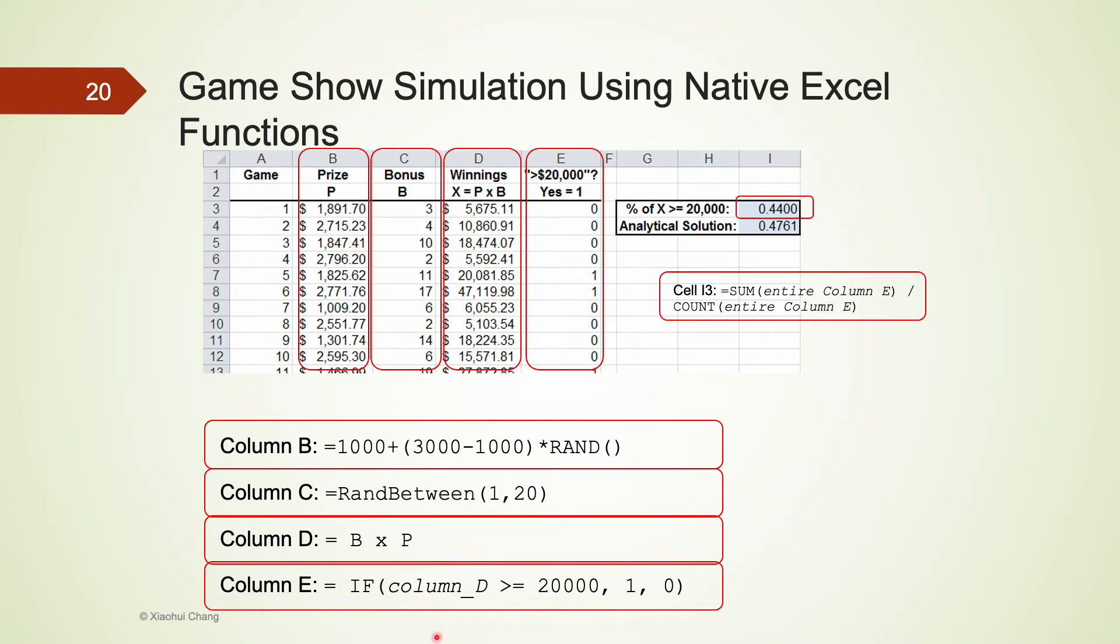We are very close to find a solution. Now we would sum up all the number of games with winnings of more than twenty thousand dollars. That would be summing up all the ones in column E. You may notice that the games with less than twenty thousand dollars winnings will not be included as their column E is simply a 0. We count the total number of games played here using count function. The proportion of games with more than twenty thousand dollars winning is calculated in cell I3. For this particular illustration, it's about 44 percent.